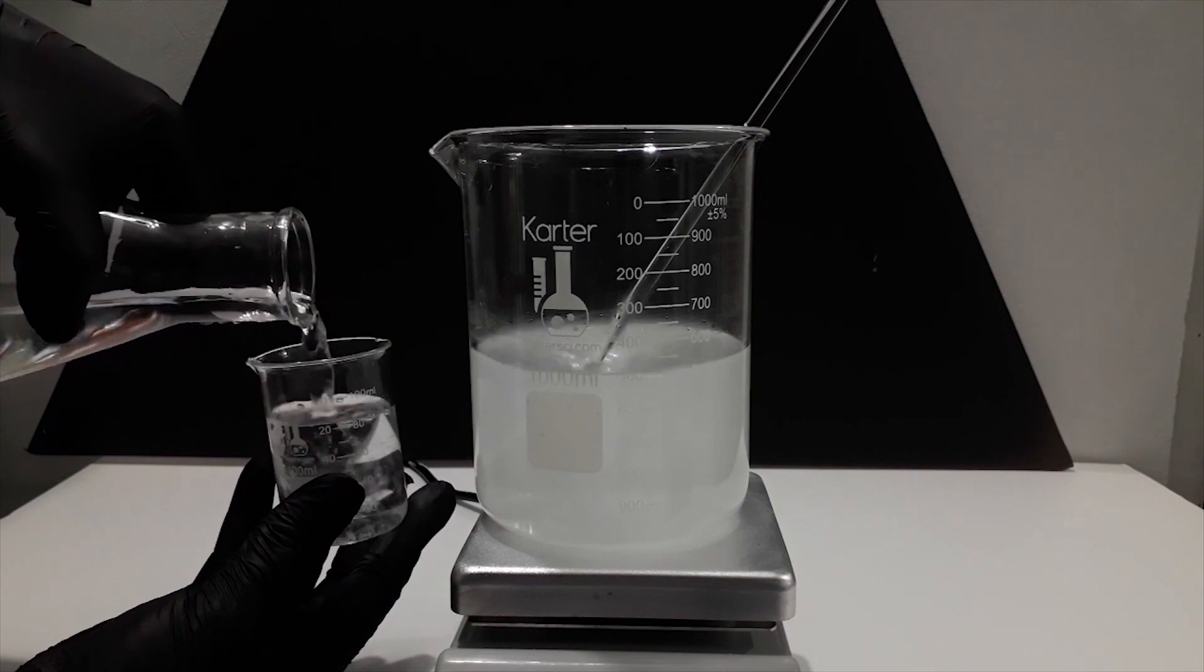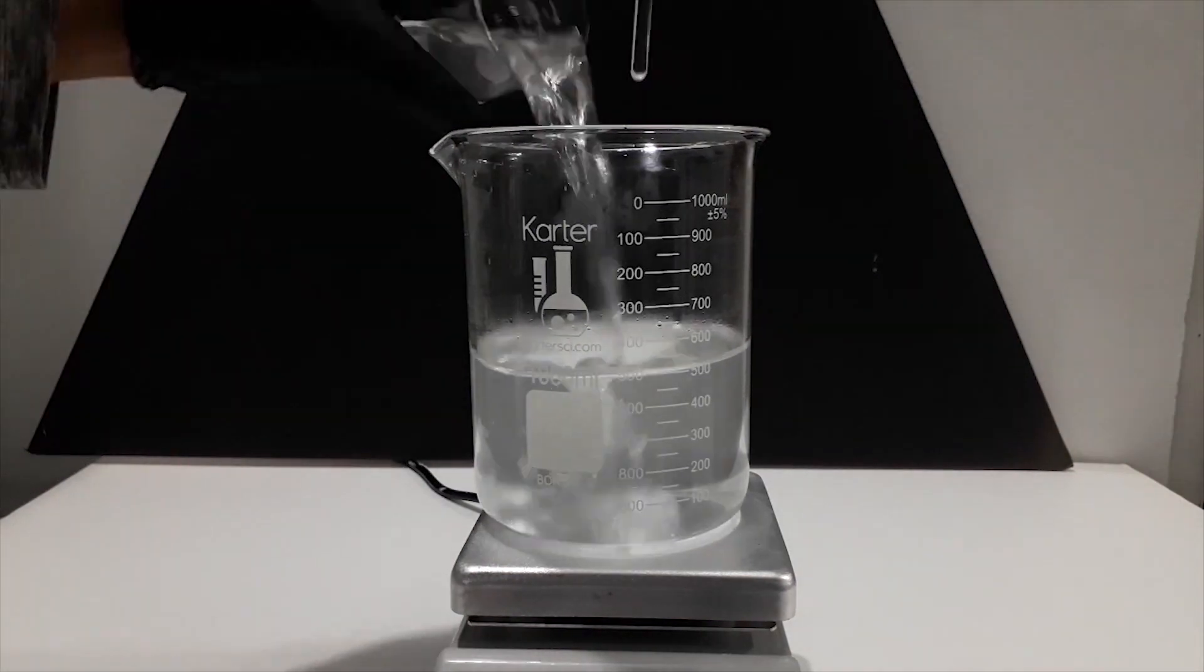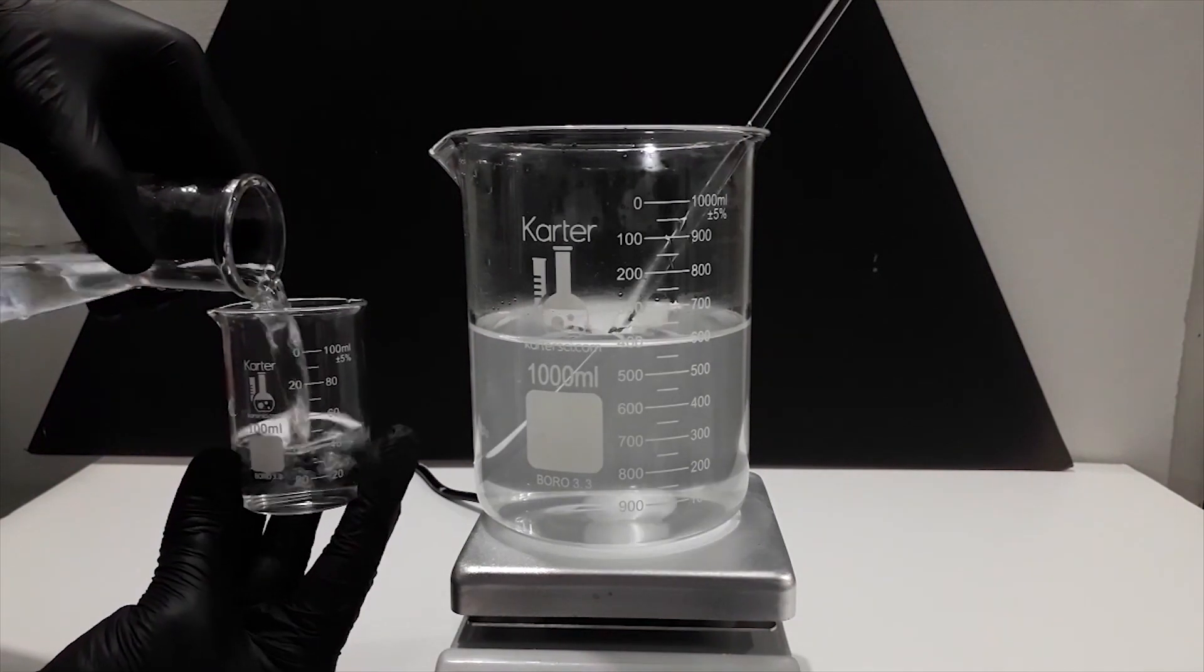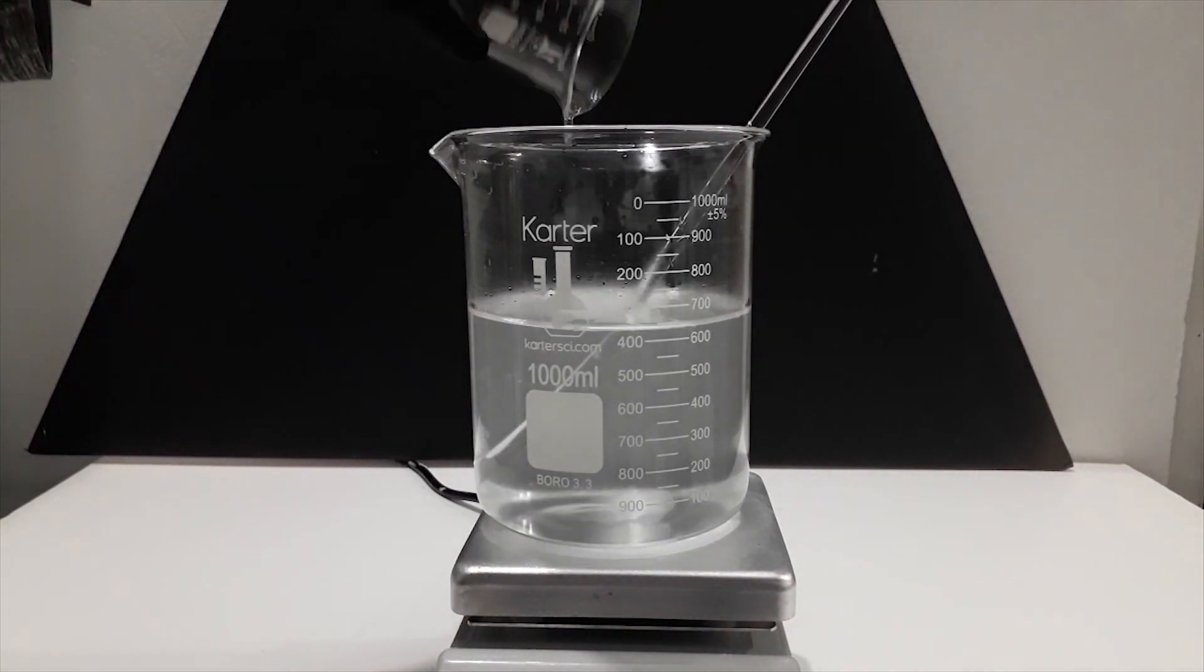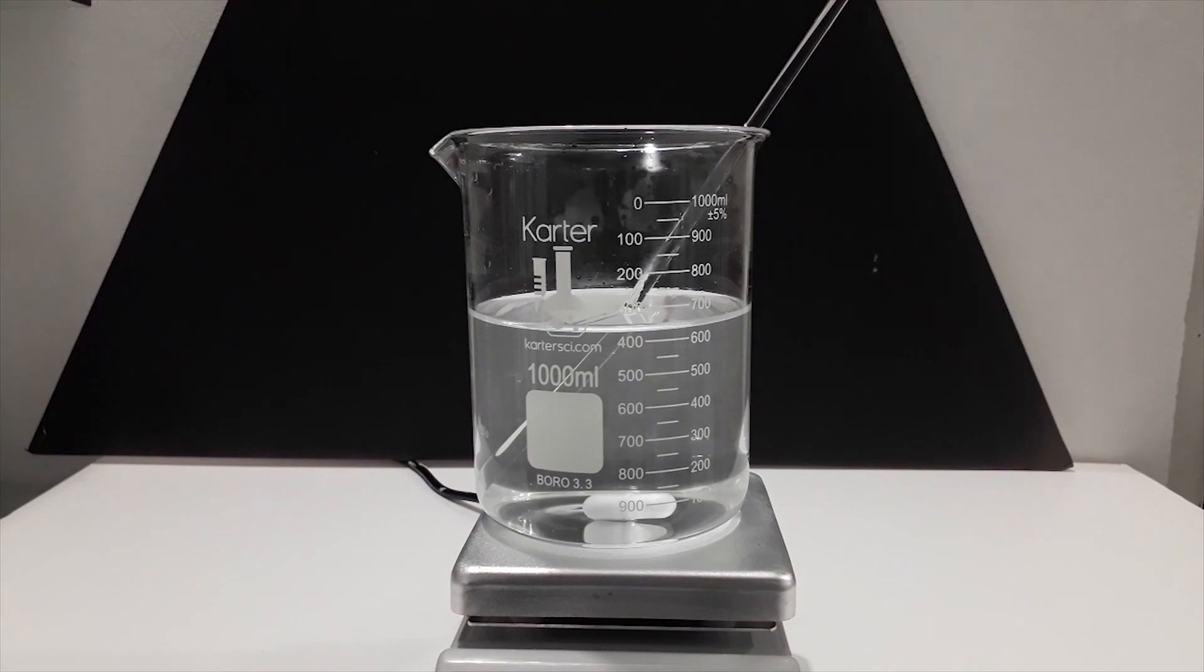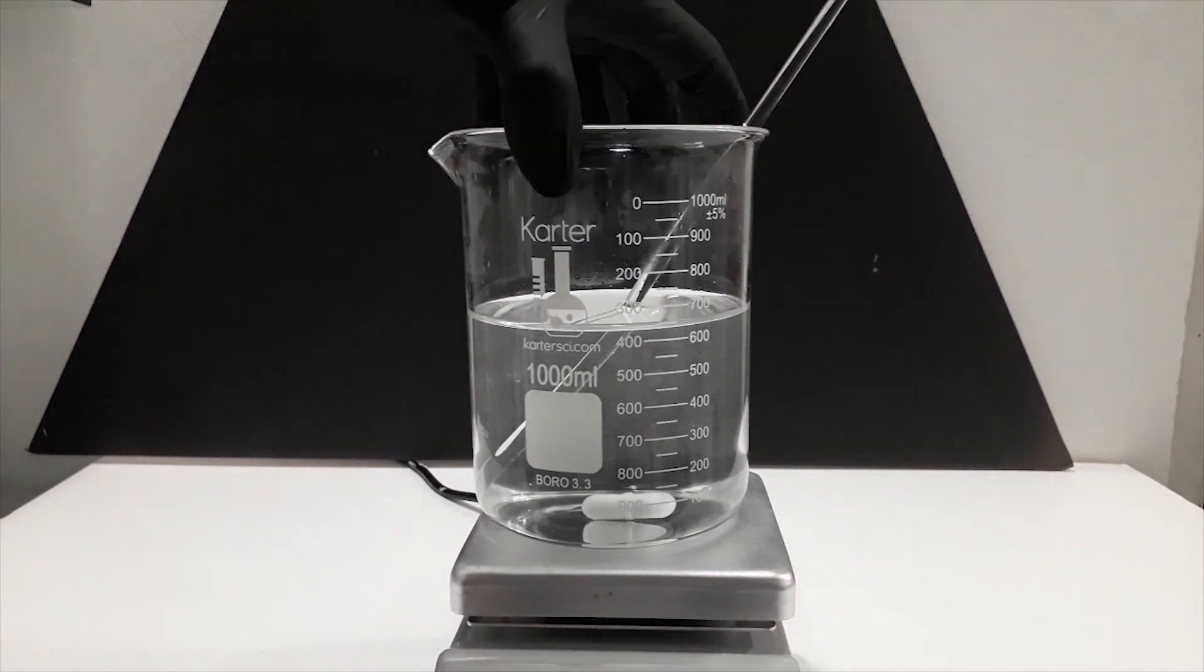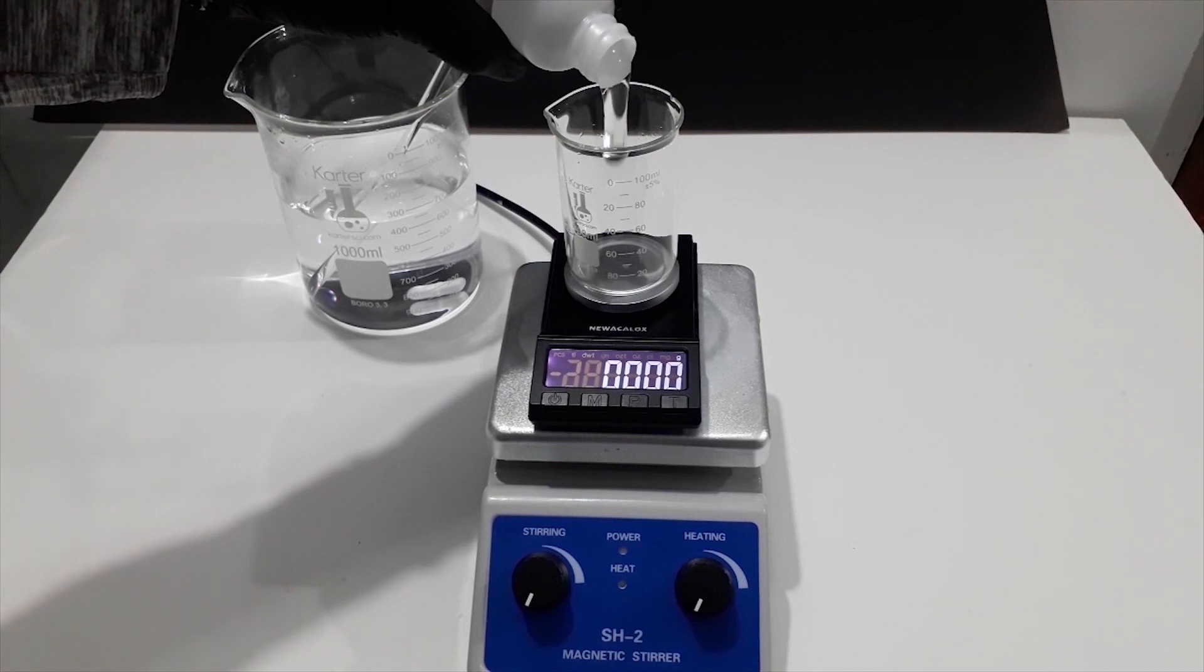A glass rod was used to prevent it from sticking to the bottom of the beaker. The small beaker was then rinsed a few times to get the remaining sodium hydroxide out of it.